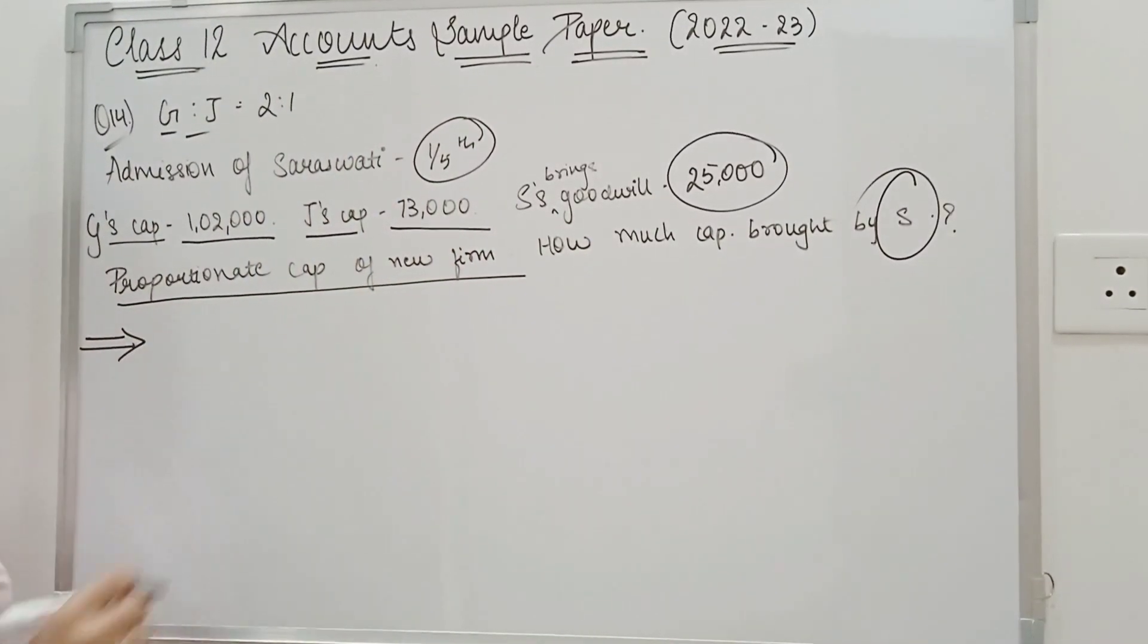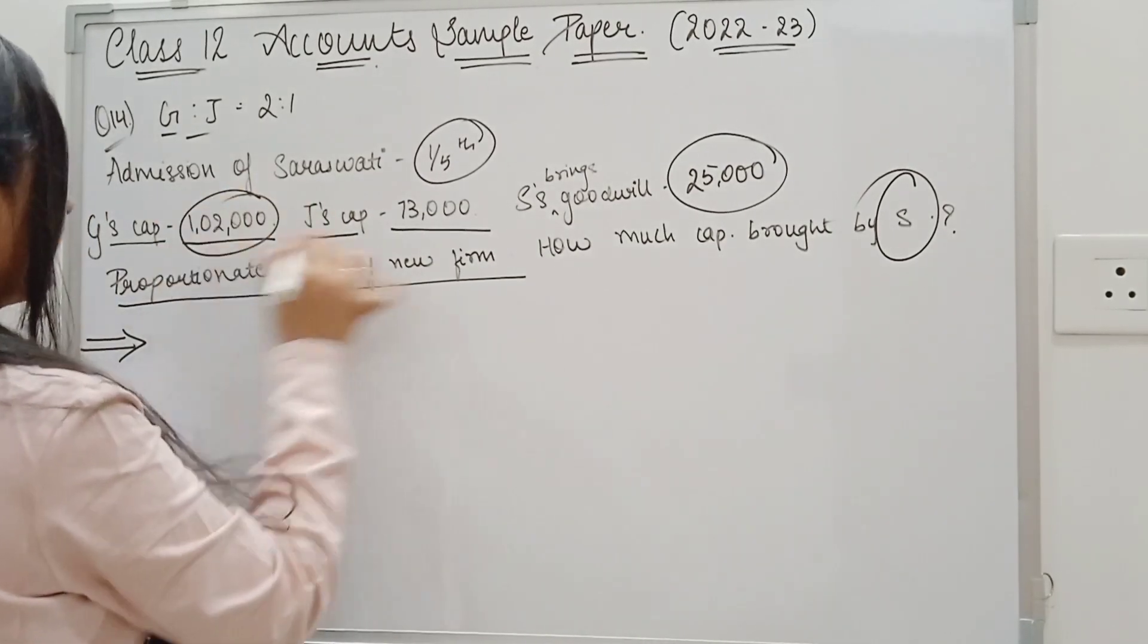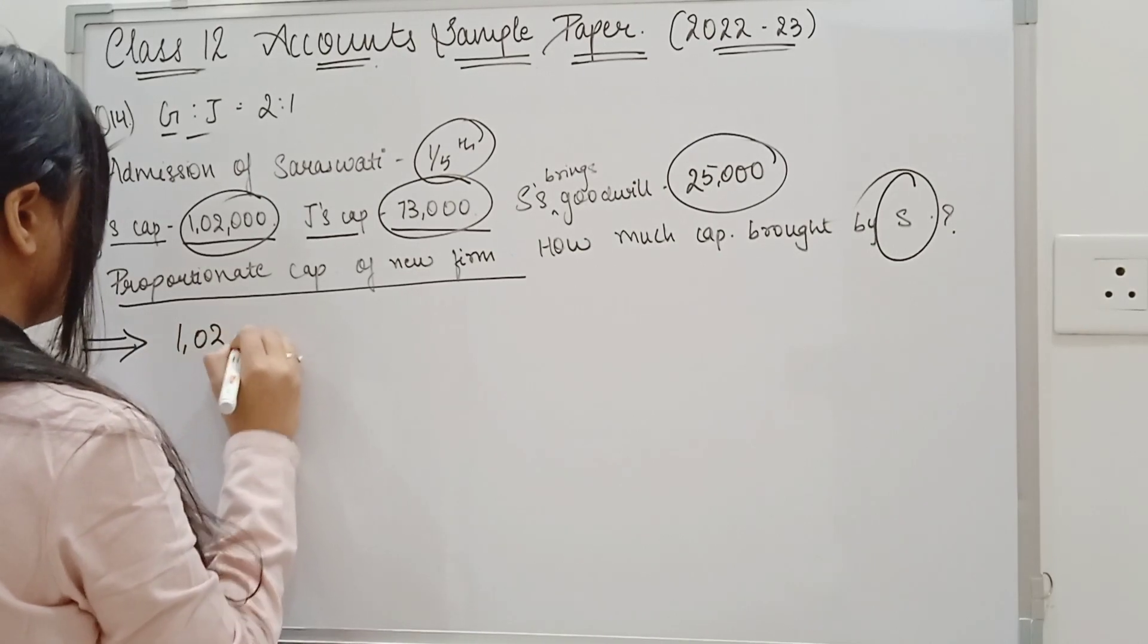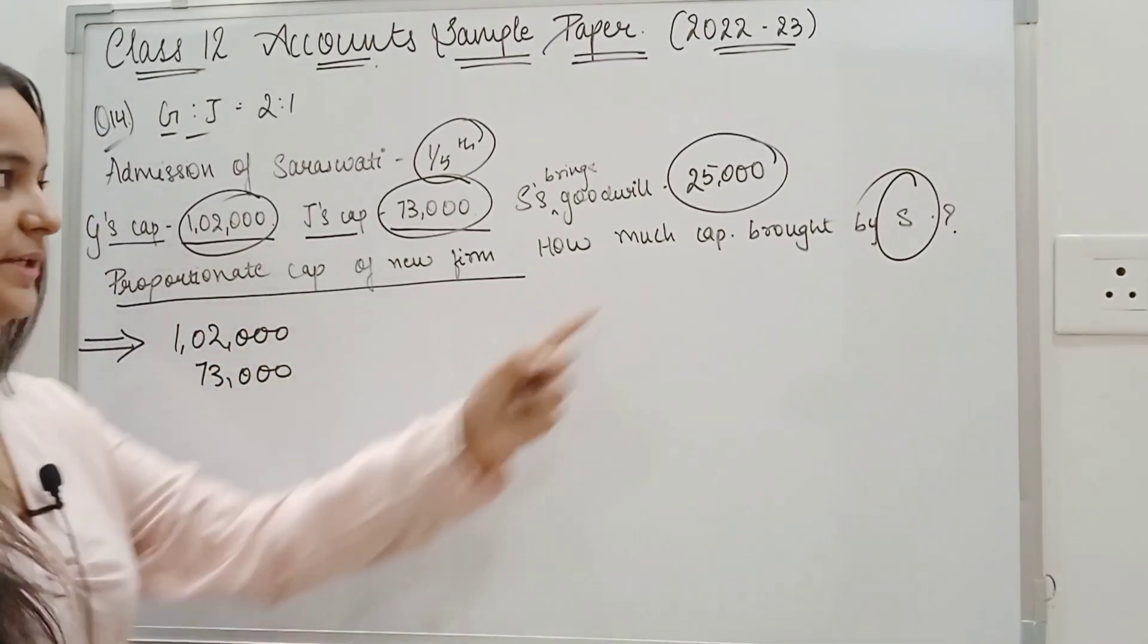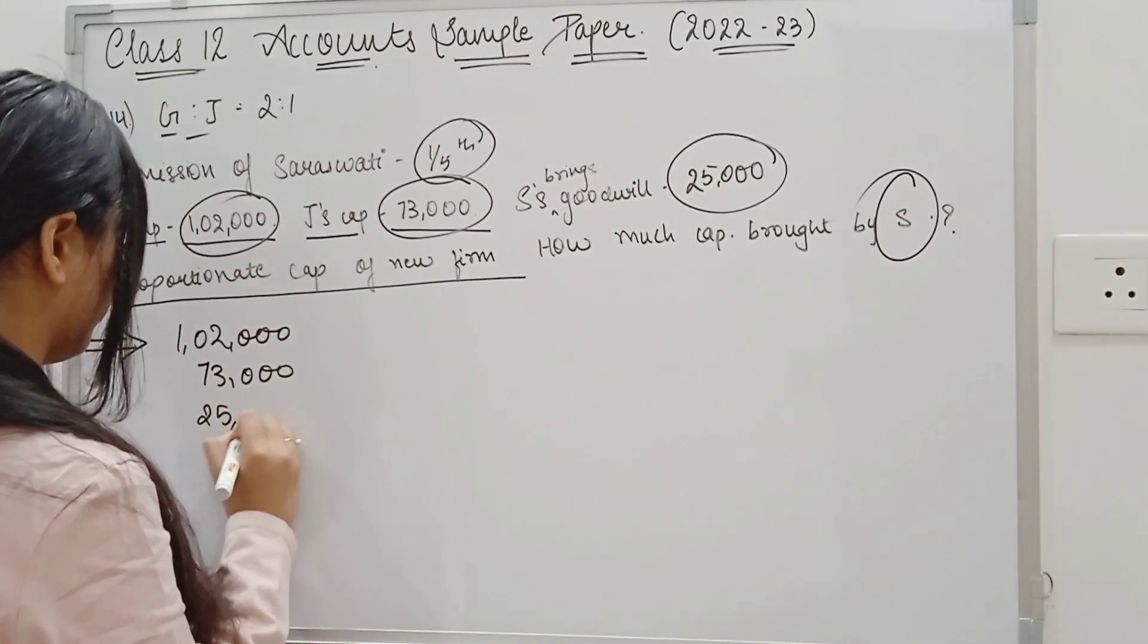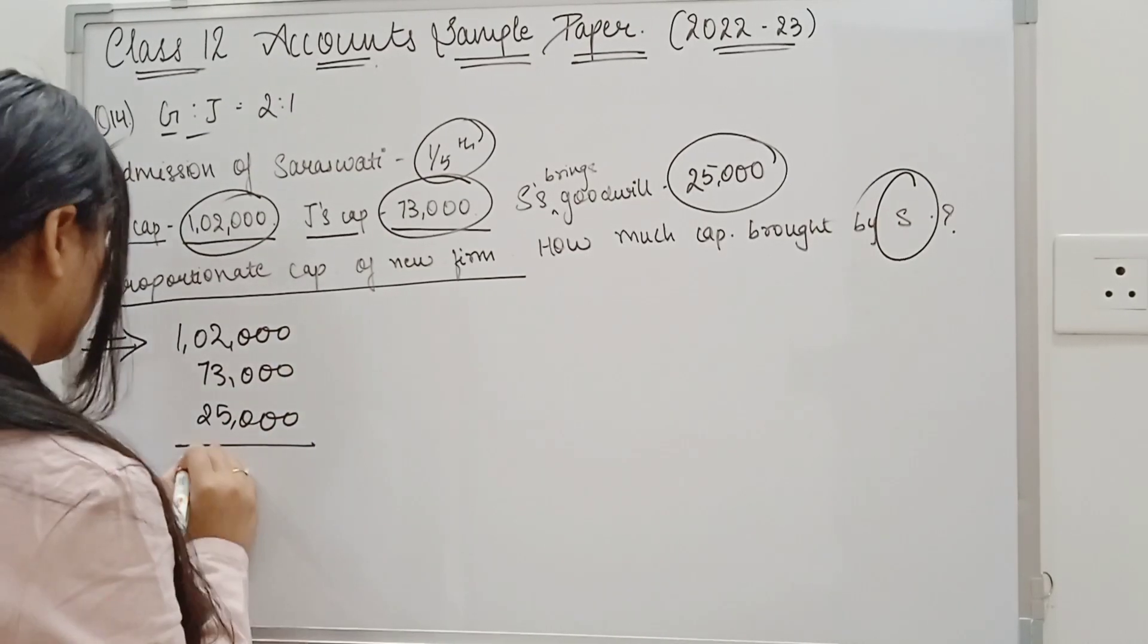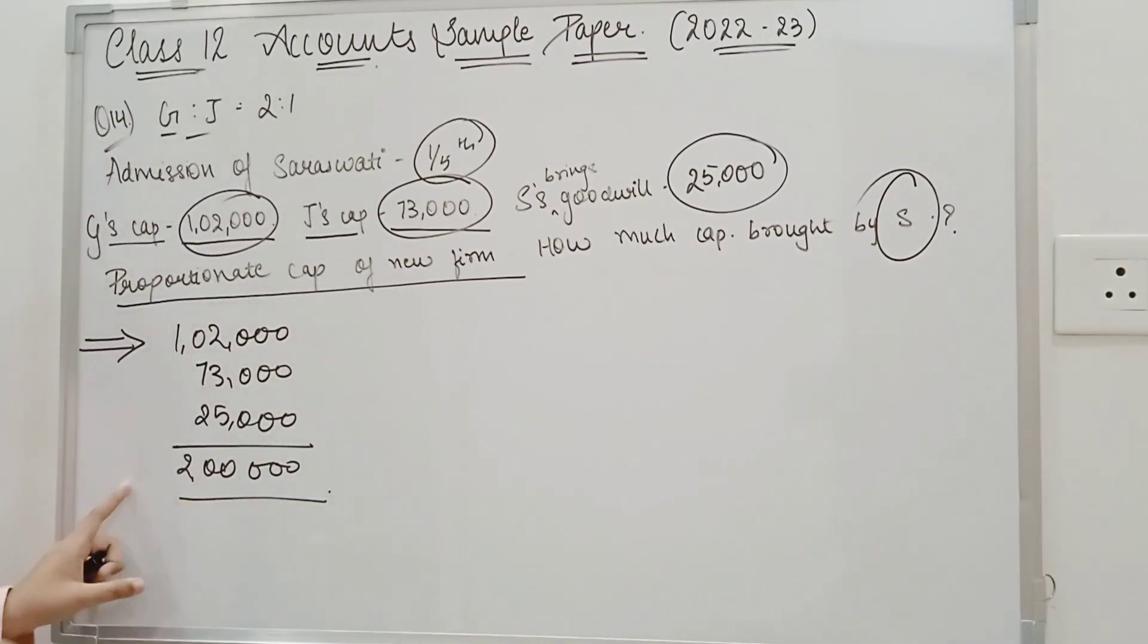So first thing, proportionate capital, how do we get out? The capital of old partners, 1,02,000 and 73,000. Plus they will get goodwill. So this will also be added in their capital, 25,000. So if you all add them, the answer will be 2 lakh.